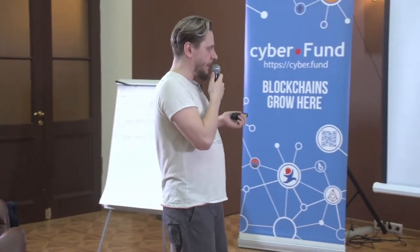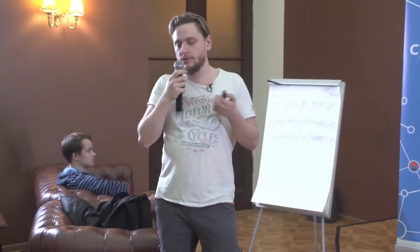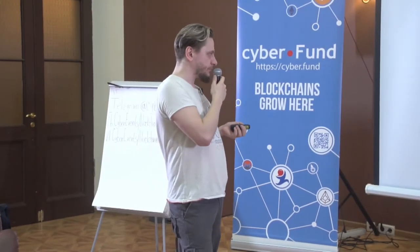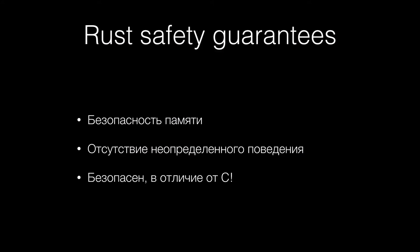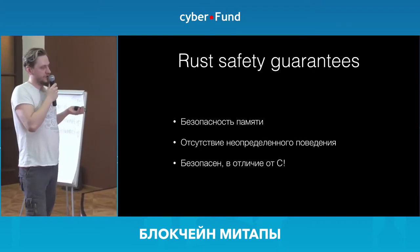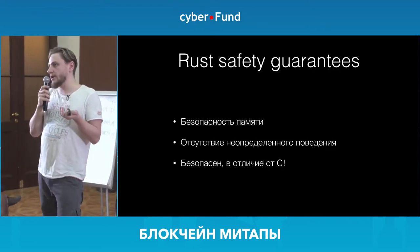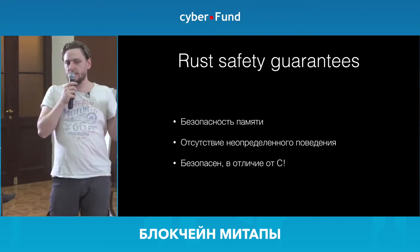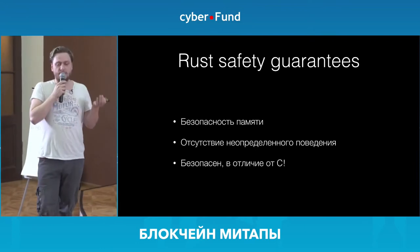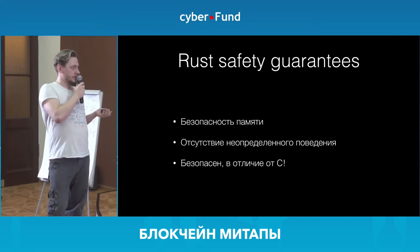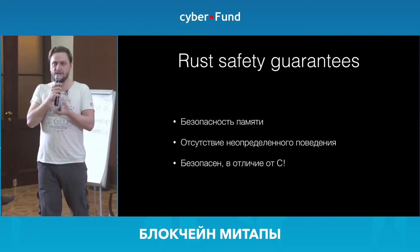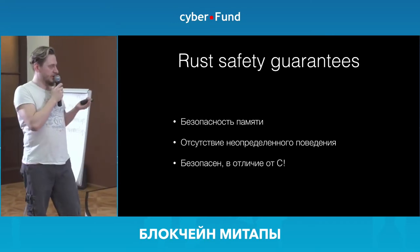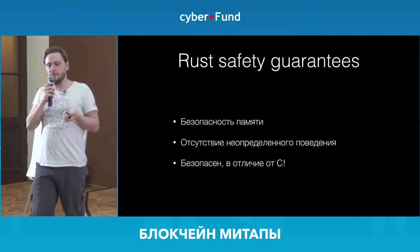Due to what Rust achieves, its safety is well known. First of all, Rust guarantees memory safety. Under no circumstances will a program written using the safe subset of Rust access unlicensed memory — no state can come from some garbage area of memory. Also, Rust does not allow any undetermined behavior. Rust is executed exactly as written — it is absolutely deterministic. And unlike C, it is safe.